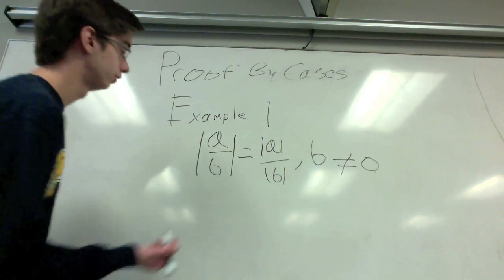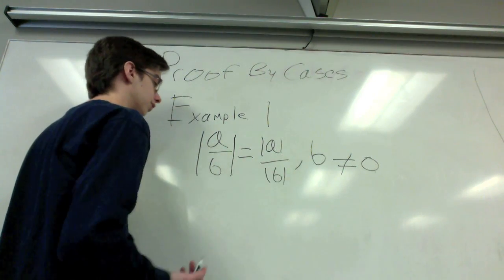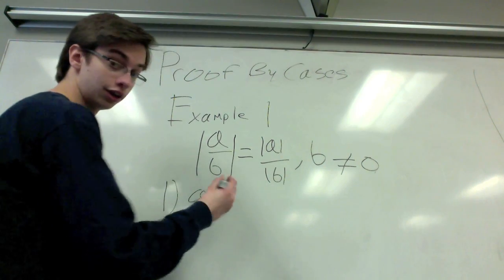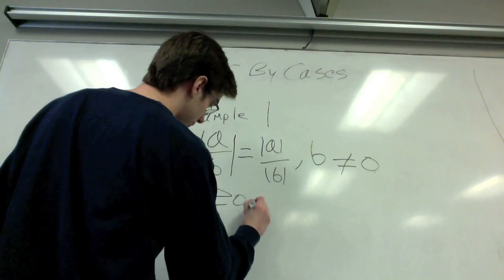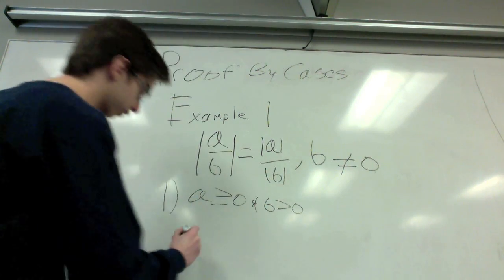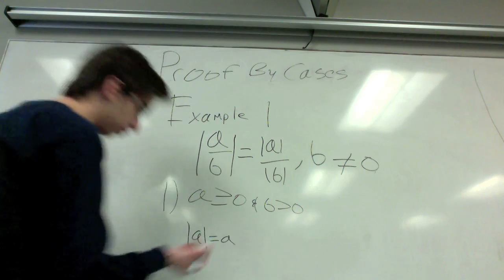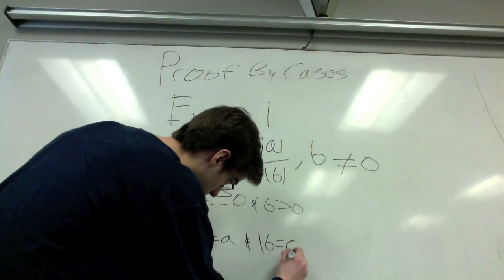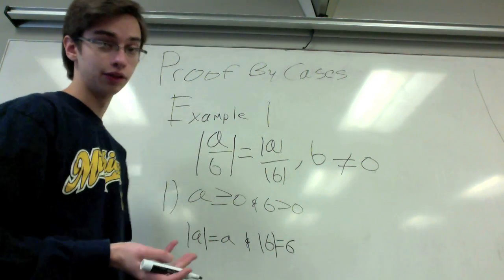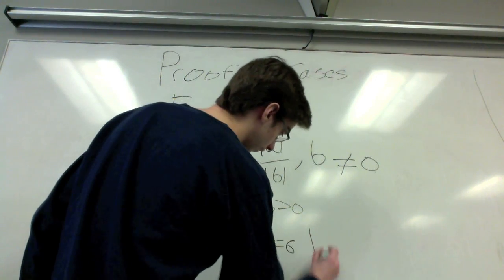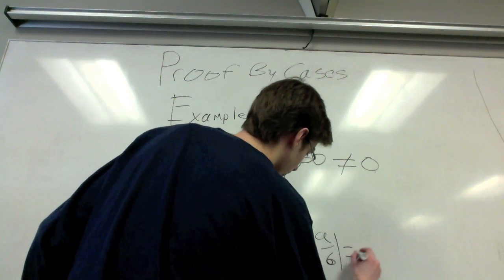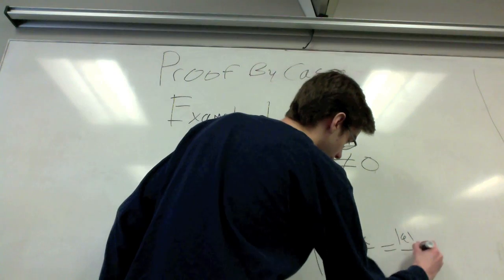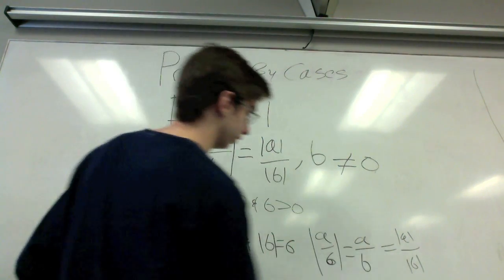The first example we're going to do is: the absolute value of A over B equals the absolute value of A over the absolute value of B, where B is not equal to zero. Case one: when A is greater than or equal to zero and B is greater than zero. The absolute value of A equals A, and the absolute value of B equals B, because the absolute value of a positive is positive. This leads to the absolute value of A over B equaling A over B, which equals the absolute value of A over the absolute value of B by substitution.